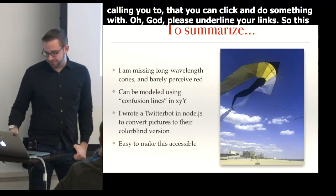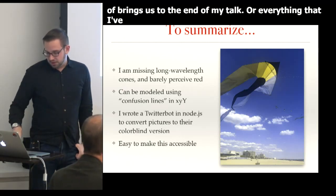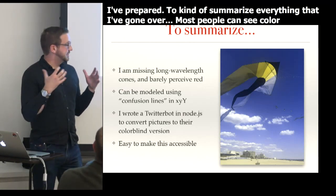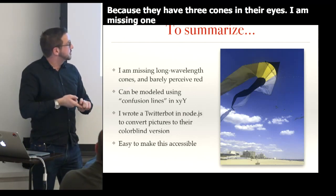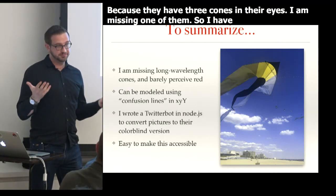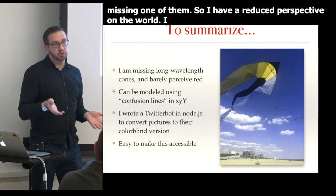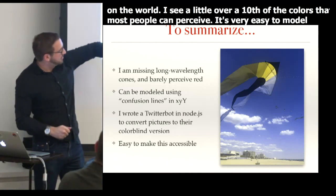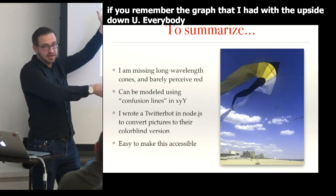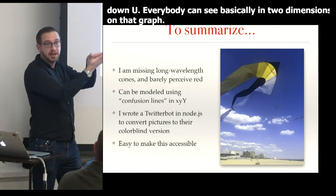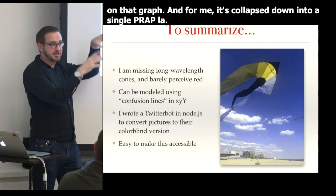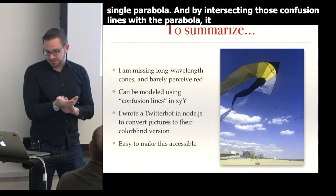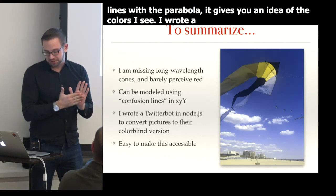This brings us to the end of my talk. To summarize: most people see color normally because they have three cones. I'm missing one, so I have a reduced perspective — a little over a tenth of the colors most people perceive. It's easy to model this using the upside-down U graph: everyone sees in two dimensions of color, and for me it collapses to a single parabola. By intersecting confusion lines with the parabola, you get an estimate of the color I see. I wrote a Twitter bot you can use, and the easy tips are: pair colors with shapes, test in grayscale, and oh God — please underline your links.